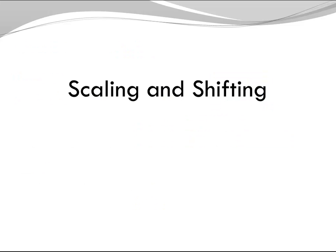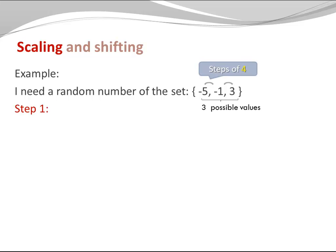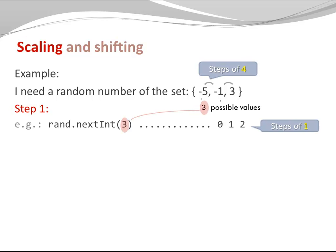What happens if I don't want to start at 0 and don't want a step size of 1? This is where we have scaling and shifting. An example: let's say I need a random number of the set: minus 5, minus 1, 3. I start with scaling — I look at my step size. Here my step size is 4, because minus 5 plus 4 is minus 1, and minus 1 plus 4 is 3. The first step of the algorithm is always the same: we have 3 possible values, so we call nextInt with argument 3. At this point I get one of the values 0, 1, 2. We have the right amount of possible choices, but these are not elements of our desired set yet — 0, 1, 2 are spaced by 1, while minus 5, minus 1, 3 are separated by steps of 4.